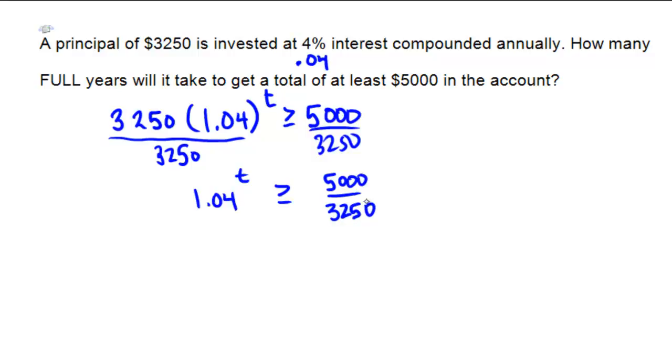Next step, break out the logarithm. So now we're going to do logarithm 1.04 to the power of T needs to be bigger than or equal to logarithm 5,000 divided by 3,250. Now we're going to take the exponent and pull it out in front by logarithm rules. So T multiplied by ln of 1.04 should be bigger than or equal to the ln of 5,000 divided by 3,250.